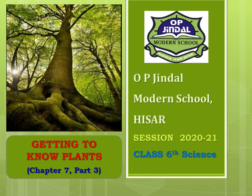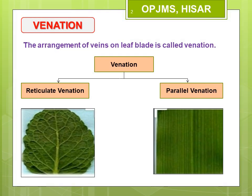Good morning everyone. Welcome to the third lecture of Chapter 7 Getting to Know Plants. In the previous lecture we studied about the structure of the leaf. Today we will study about venation and its types and also the functions of the leaves. In our previous class we studied that the midrib on either side branches out as vanes and vanelets to form a network. The arrangement of these vanes on the leaf plate or leaf lamina is known as venation.